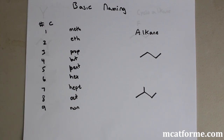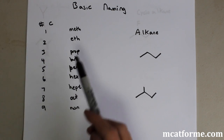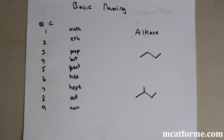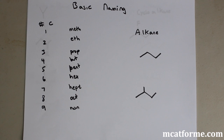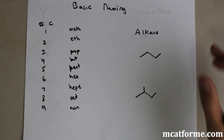So: one is meth, two is eth, three is prop, four is but, five is pent, six is hex, seven is hept, eight is oct, and nine is non. Those are all prefixes to the actual parent compound.